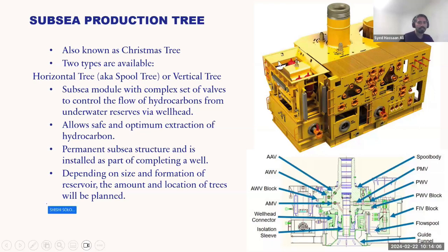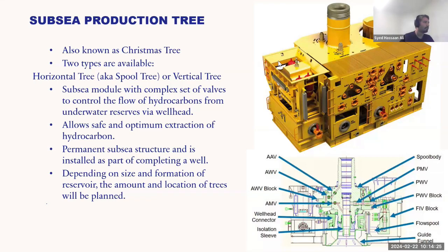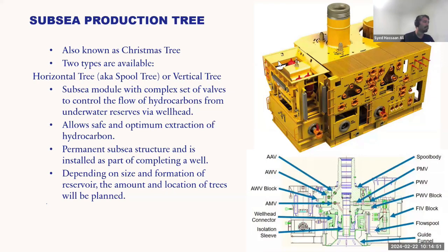The subsea tree is a complex set of valves used to control hydrocarbons from the subsea reservoir, including lower master valves, upper master valves, swab valves, and wing valves. It is part of a permanent subsea structure — not easily pulled. It is planned, ordered, and tested well in advance, then lowered onto the subsea surface via an installation vessel. Many connections are operated through a remotely operated vehicle, or ROV.